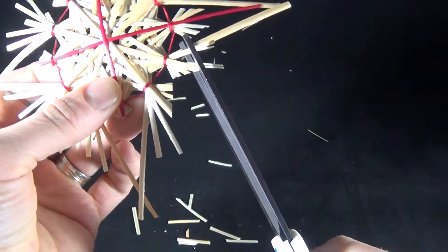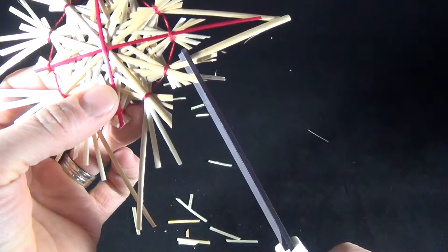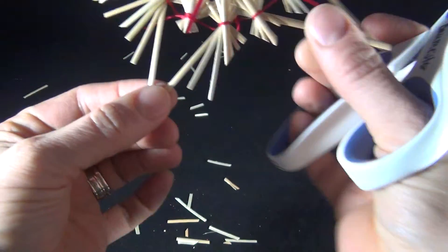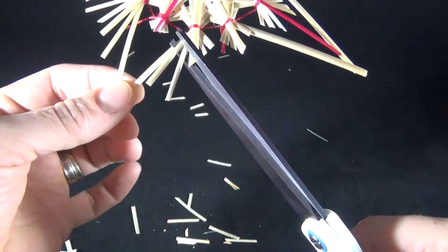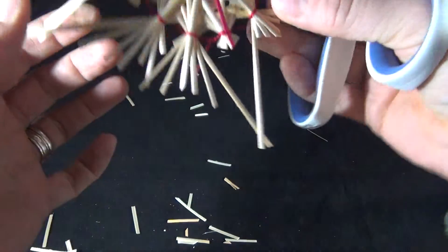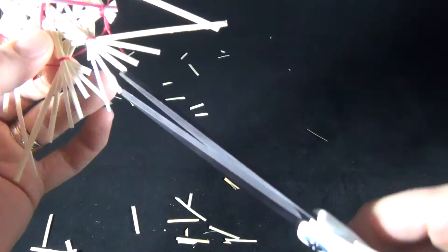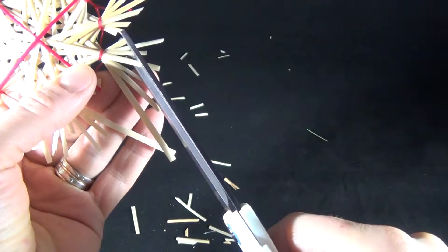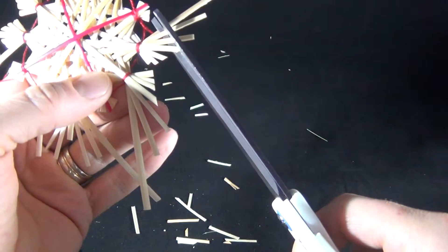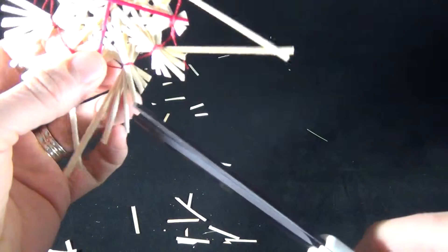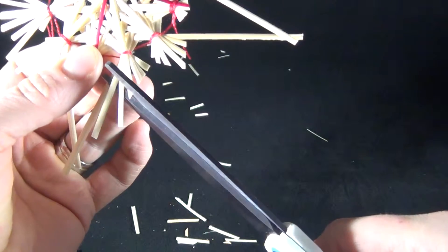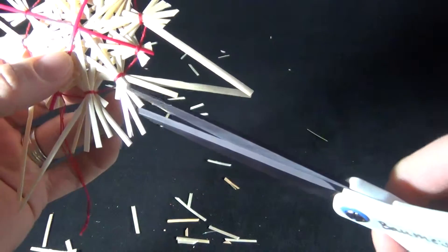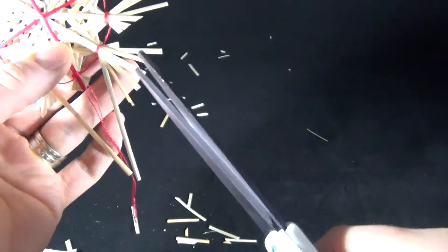Now we're going to go this way, again avoiding the star part, avoiding this long one, and remembering that we have this long one too. Cutting over them.